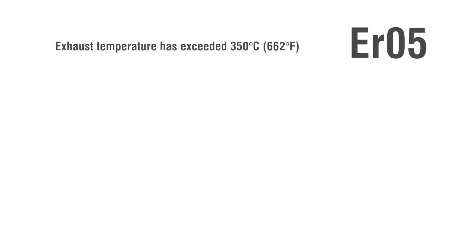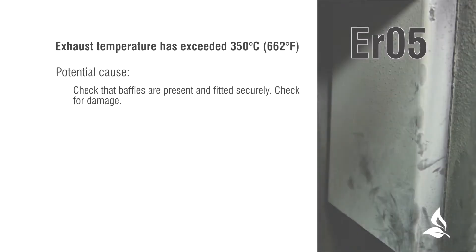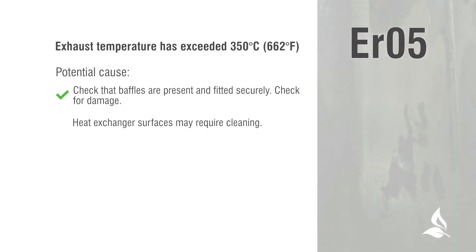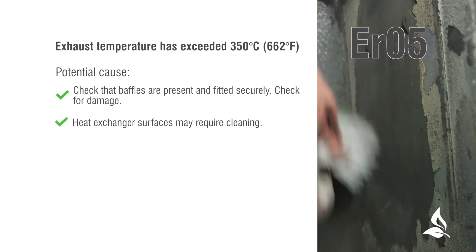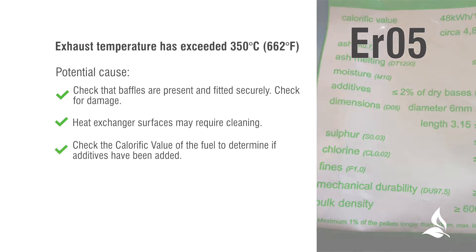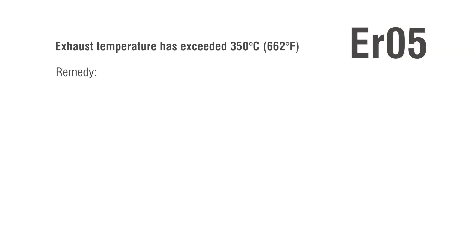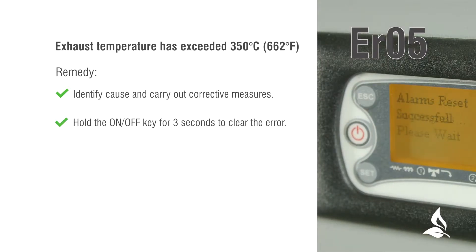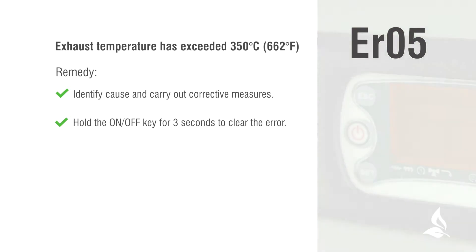ER05: Exhaust temperature has exceeded 350 degrees Celsius (662 degrees Fahrenheit). Potential causes: check that baffles are present and fitted securely, and check for damage. Heat exchanger surfaces may require cleaning. Check the calorific value of the fuel to determine if additives have been added. Remedy: identify the cause and carry out corrective measures. Hold the on-off key for 3 seconds to clear the error, then restart the boiler.